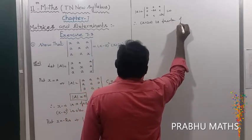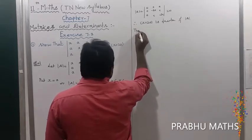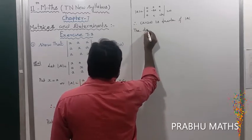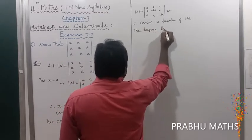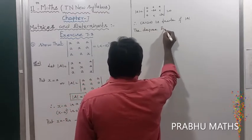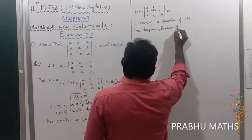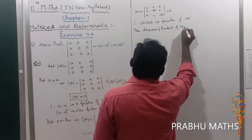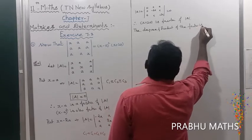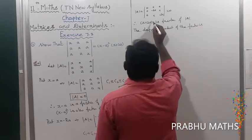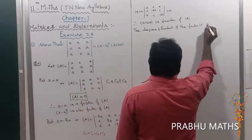The degree of the product of factors: (x minus a) whole square contributes degree 2 and (x plus 2a) contributes degree 1, so the total degree of the product of factors is 3.